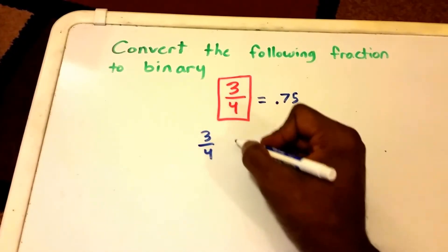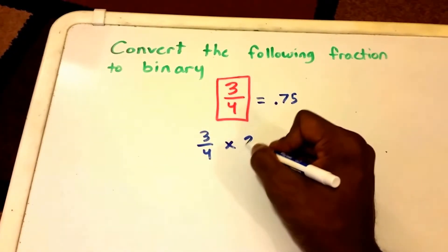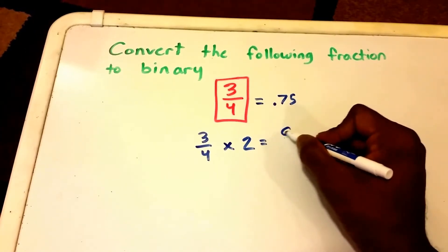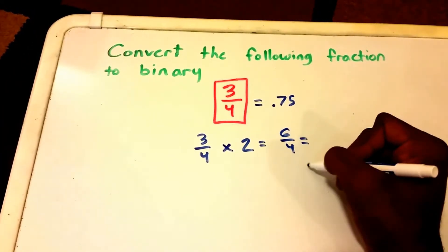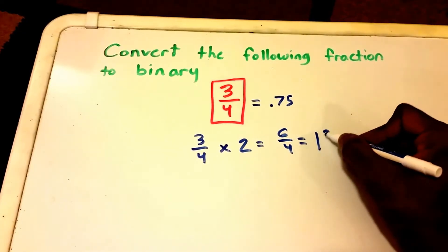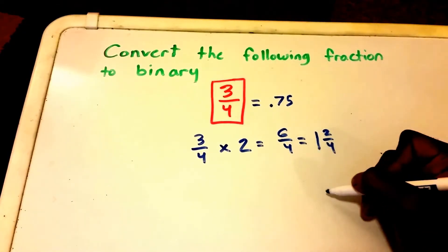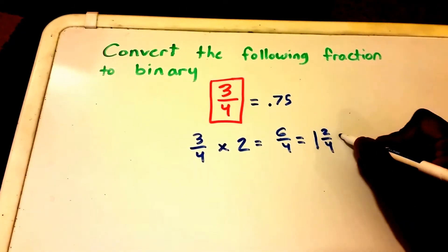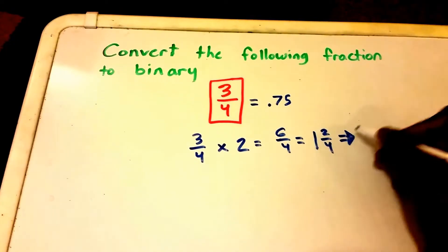So first we're going to start off with 3 fourths. We're going to multiply that times 2 and we get 6 fourths which is equal to 1 and 2 fourths. So we take that whole number the 1 and that's going to become our first binary digit.